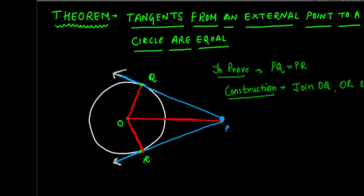Now we need to start the proof. In the proof we will be using the concept of congruence. Let's look at two triangles: triangle POQ and triangle POR. We're taking these two triangles.